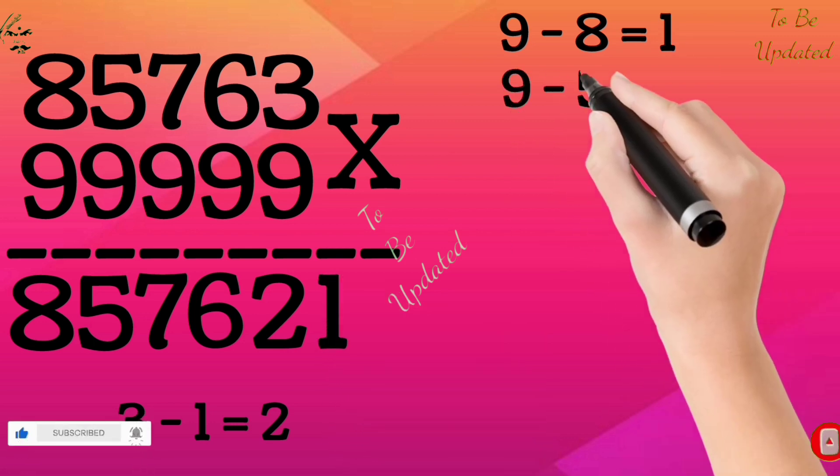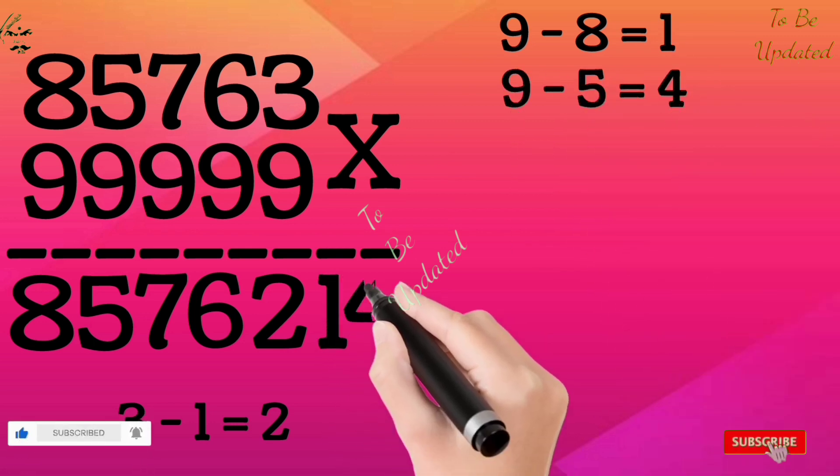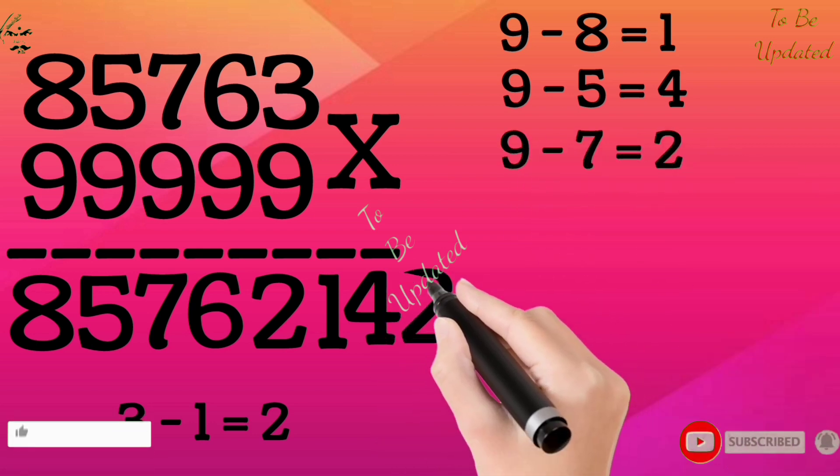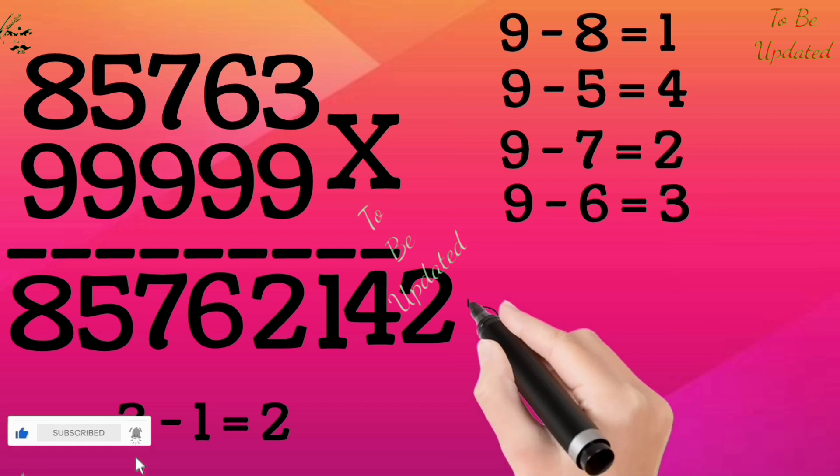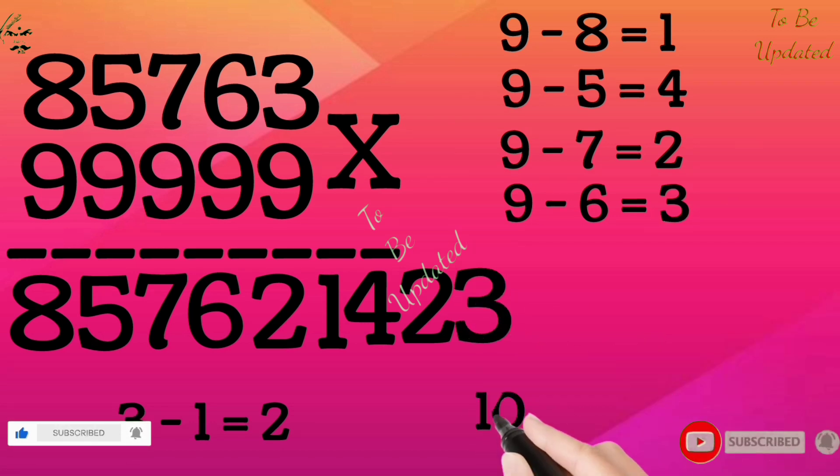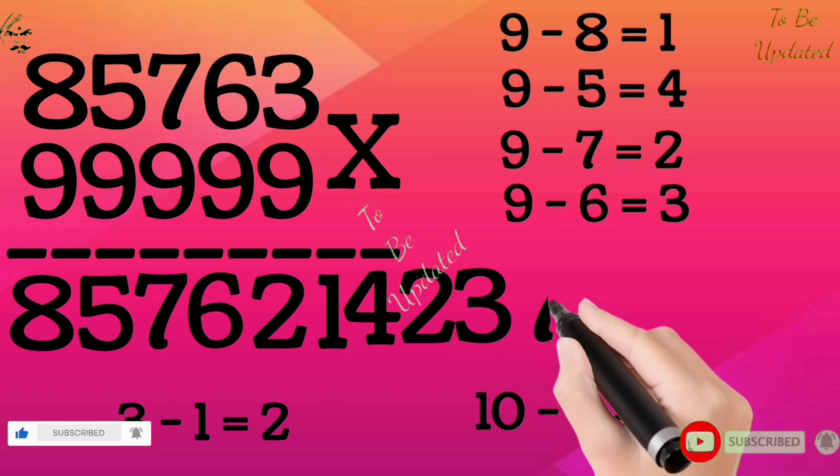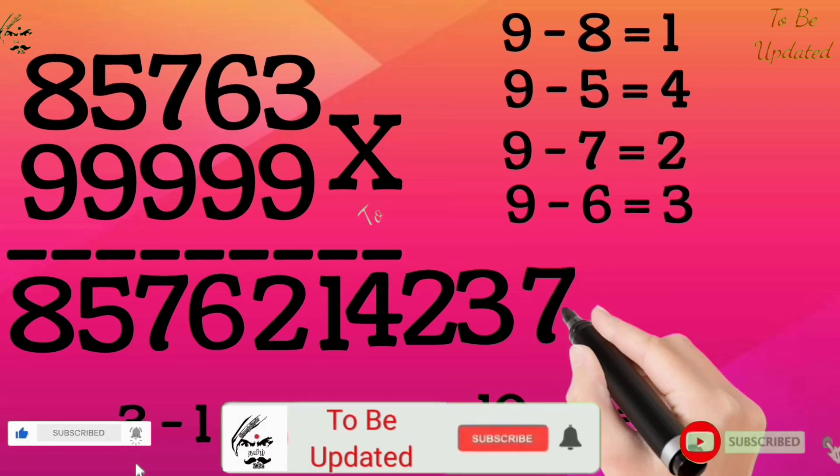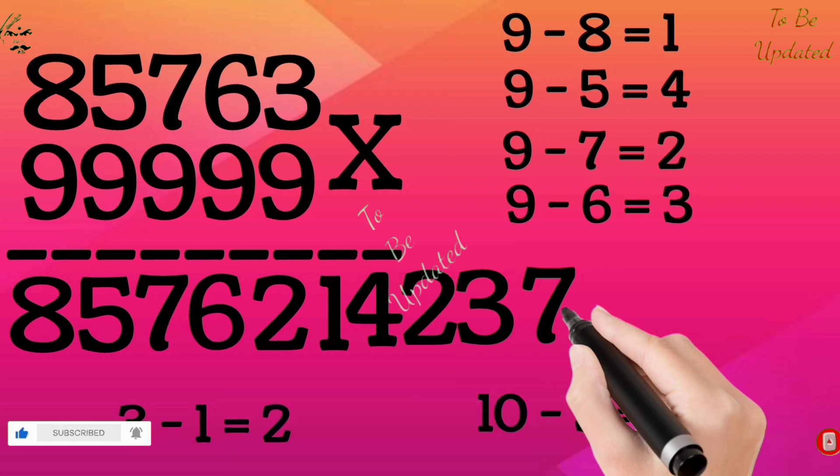9 minus 5 is 4. 9 minus 7 is 2. 9 minus 6 is 3. The last number alone subtract from 10. So 10 minus 3 is 7. Now the answer is 857621-4237. This is the answer, check it out.